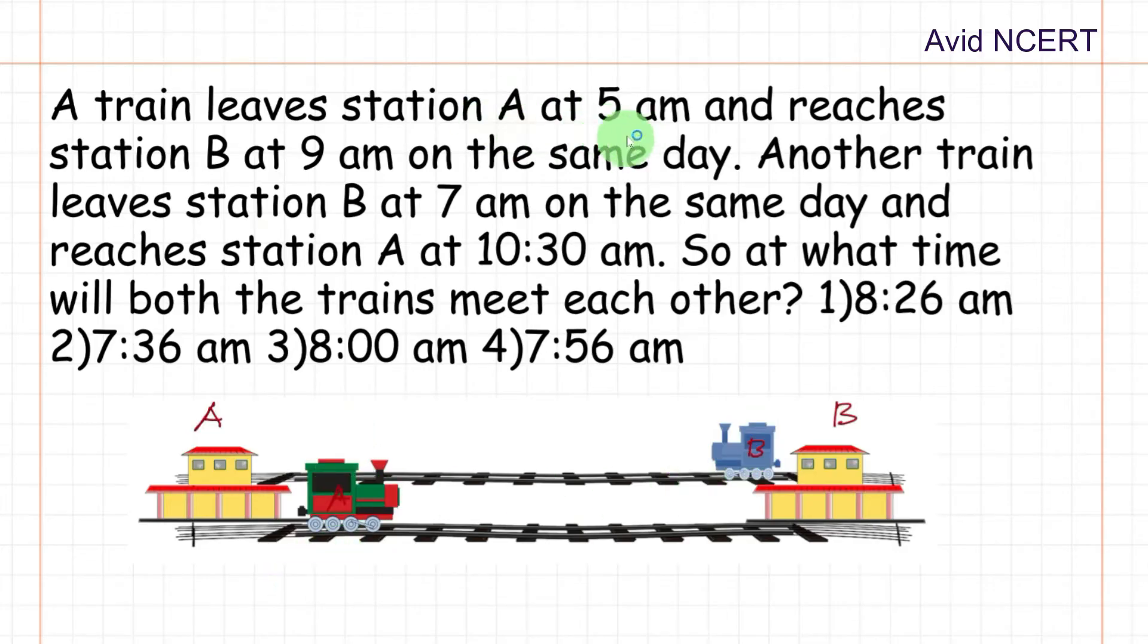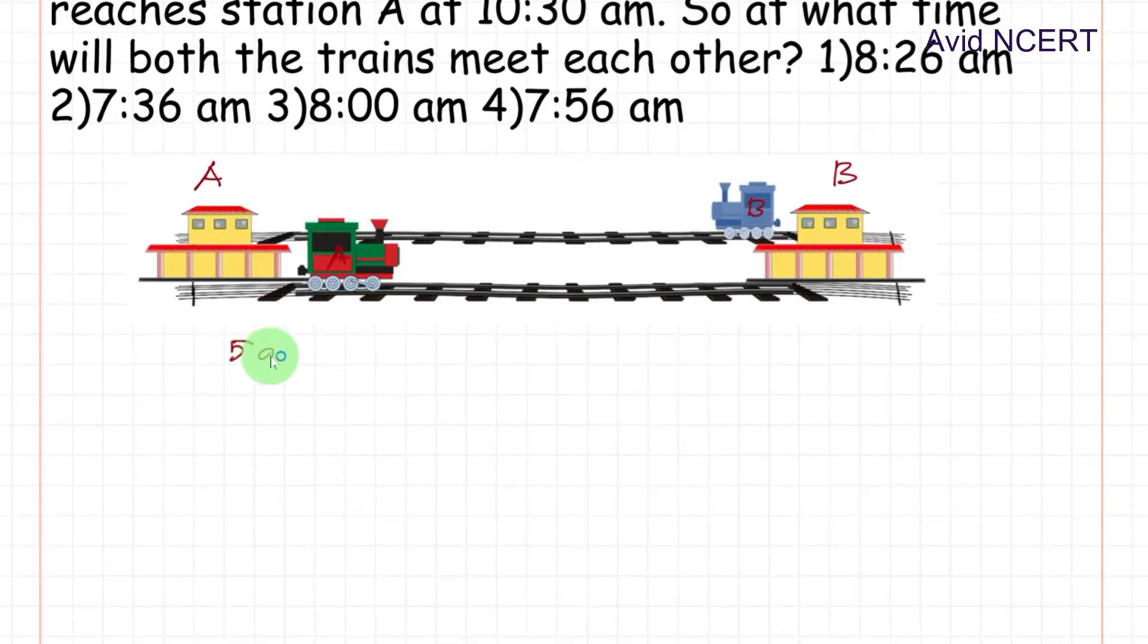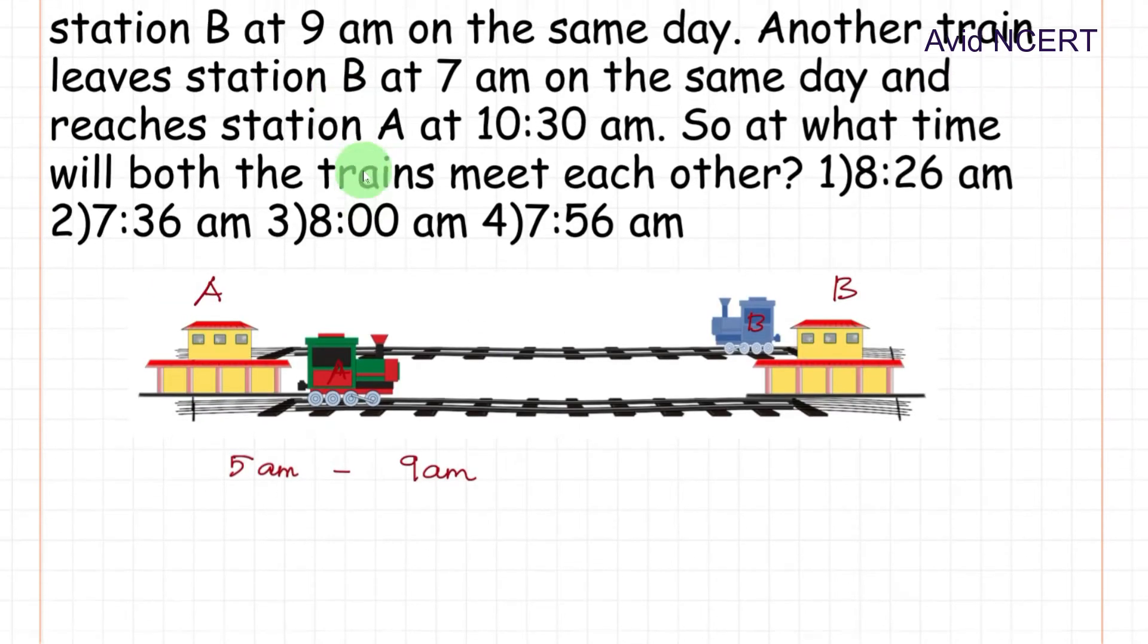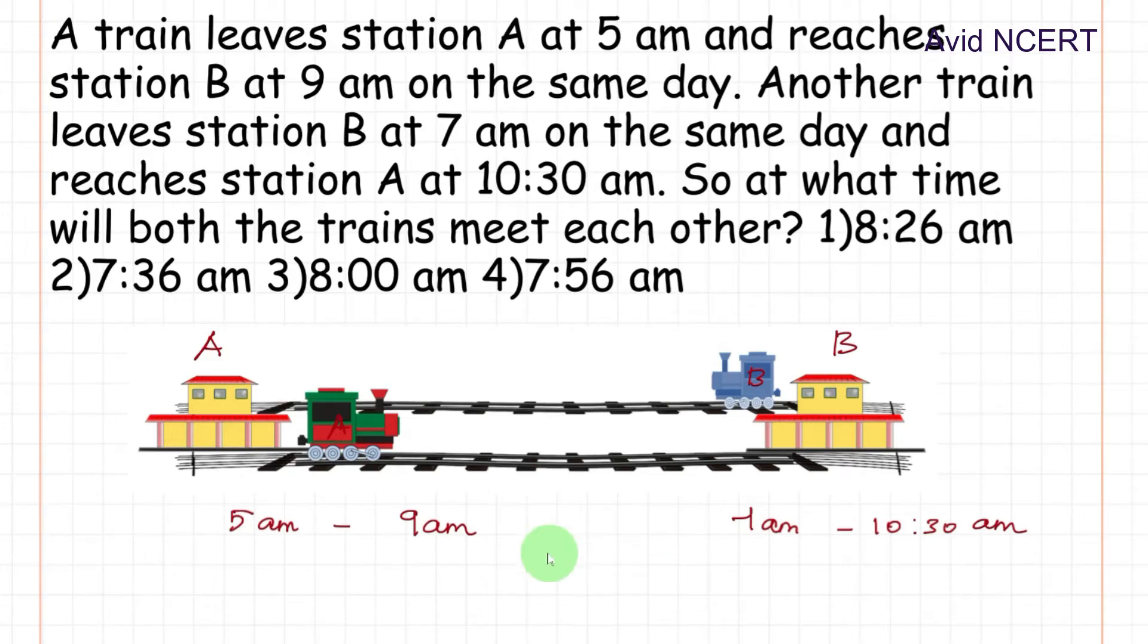So train A starts at 5 a.m and reaches station B at 9 a.m. Train B starts at 7 a.m and reaches at 10:30 a.m. I'll be solving this question in three methods, just take the one which is easier for you.